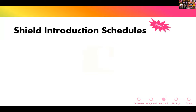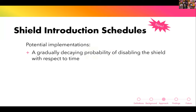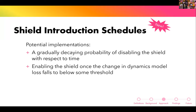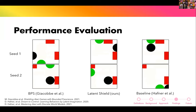To address this, we propose a shield introduction schedule: don't start shielding until a proper model of the world has been learned. Potential implementations include a gradually decaying probability of disabling the shield, or enabling the shield once the loss has plateaued.